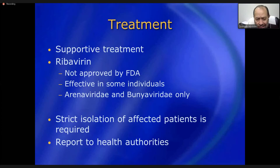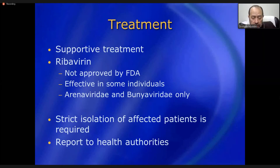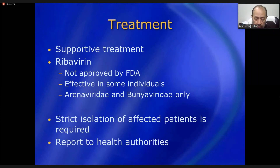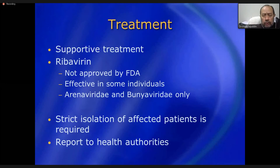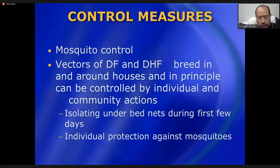Dengue cannot be directly transmitted from human to human — it needs a vector in between. It cannot be transmitted through excreta, airborne, waterborne, or food-borne channels either. Reporting to health authorities is mandatory as this is a notifiable disease. All emphasis should be placed on control measures — primarily mosquito control.